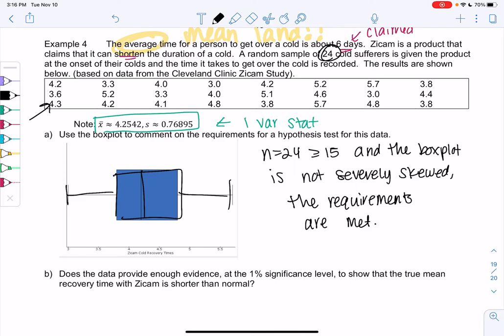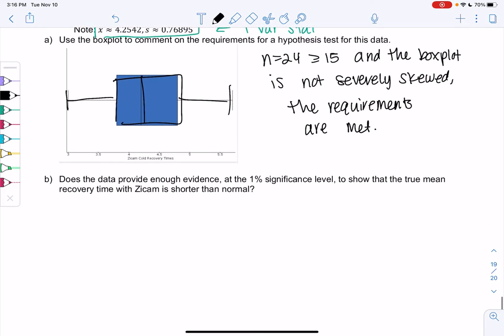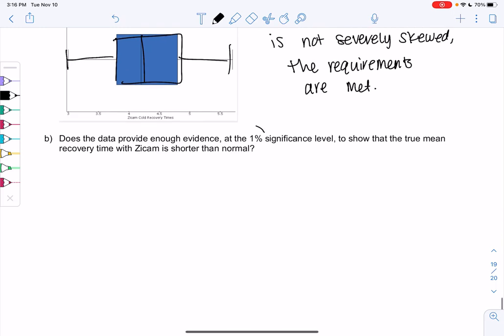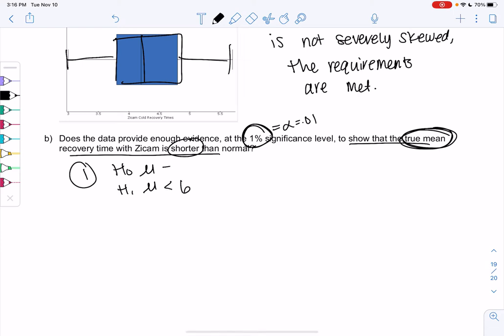So let's go ahead and do a hypothesis test. Does the data provide enough evidence at 1%? So alpha will be 0.01 to show that the true mean recovery time is shorter than normal. So we will use mu because we're in mean land. Shorter means less than and normal was six. So the claim is that it takes six days to get over a cold. And then H1 is we want to prove that it's shorter or less than six. And we'll just quickly state alpha is 0.01.